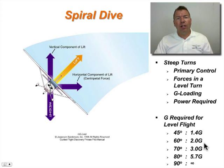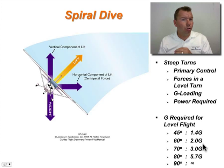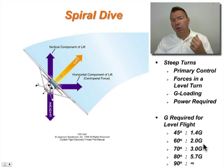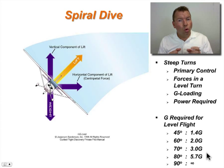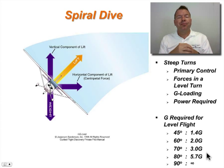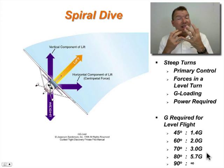Those of you flying transport category airplanes like airliners can't even do over a 66° bank angle and hold altitude if you had the speed to pull 2.5 G's — you would have to be above maneuvering speed to do that. Those flying normal category airplanes have a 3.8 G limit load, and your critical bank angle is about 73°. That's the maximum at which you can expect to hold altitude if you're able to pull 3.8 G's. Bank angles greater than those will result in altitude loss.